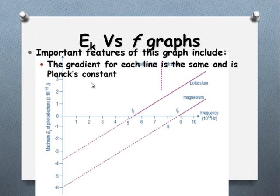99% of the time, that graph will produce a gradient that's maybe 5 or 4, but not exactly Planck's constant. Be careful, don't try and fudge it, they're not expecting it to be exact. They want to test that you understand this concept, that the gradient will produce Planck's constant.